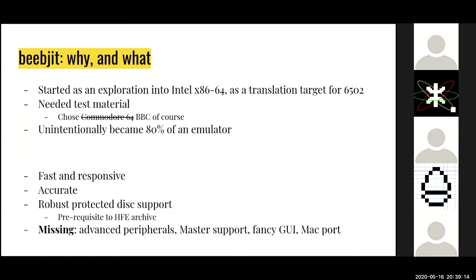After a particularly tedious day at work — meetings and so on — I got home and just had to fiddle with something low level. So I started exploring if you could translate 6502 code into modern Intel x86-64 code, and what it would look like, how directly you could translate it. It was a really technically fascinating project and got me hooked pretty quickly. Once I got it running, I wanted to run something useful — some real code. So I chose the BBC as a source of code.